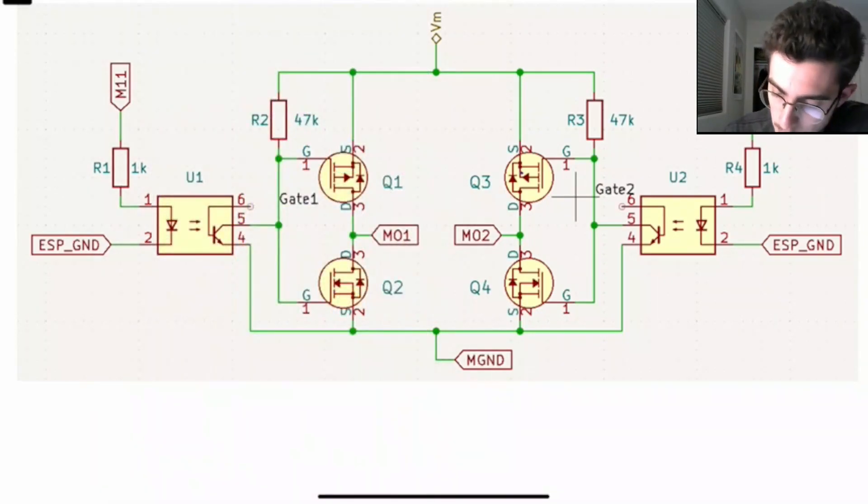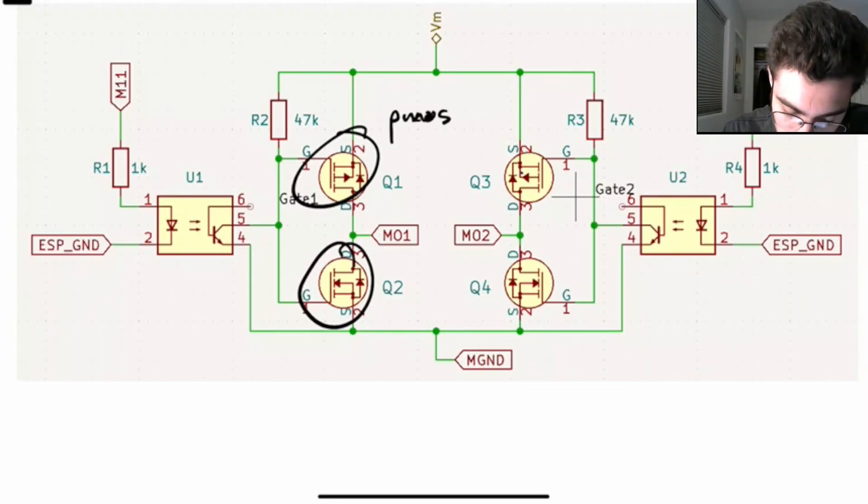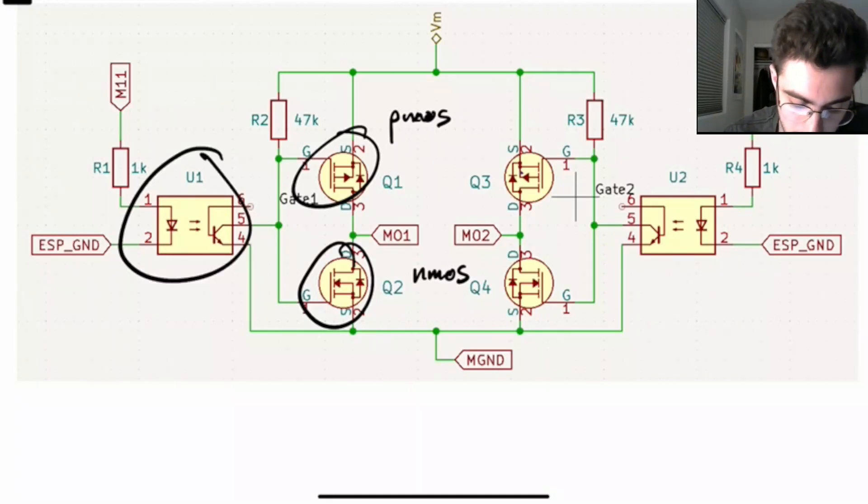So the main components in an H-Bridge circuit are these MOSFETs. And there are two different types of MOSFETs. We have PMOS and we have NMOS. We also have, in this circuit, opto-isolators to protect our microcontroller from large voltage spikes and unforeseen current draw. And I'll explain how opto-isolators work near the end of the video.